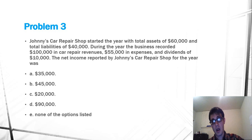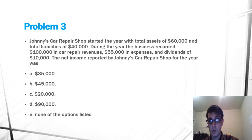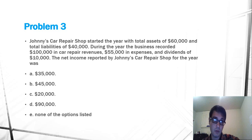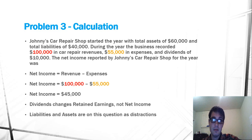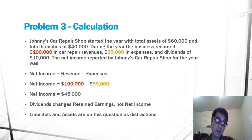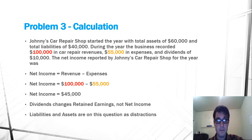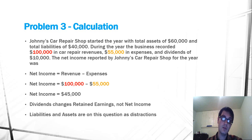I always solve problems by reading the last sentence first because that really gives you the information you need. The last sentence here asks for net income, and we know net income's formula — it's extremely simple. Net income equals revenues minus expenses. The revenues are $100,000 in car repair revenues, and the expenses are $55,000. So $100,000 minus $55,000 equals $45,000.